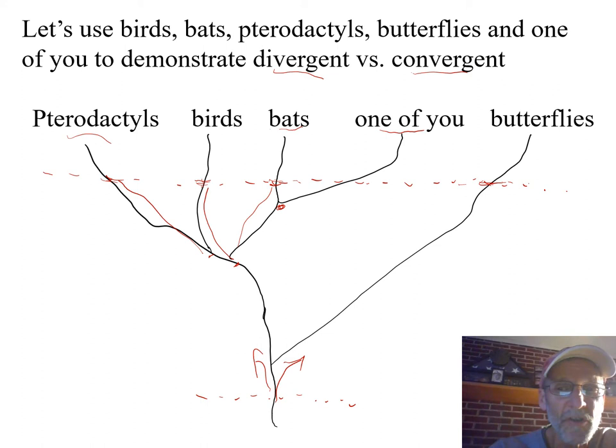because butterflies' wings don't evolve from front limbs. They don't have bone structures. They're quite different in structure and origin from these three, and therefore, them, compared to any of these three, are analogous structures, examples of convergent evolution.